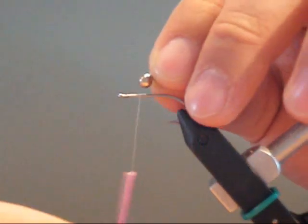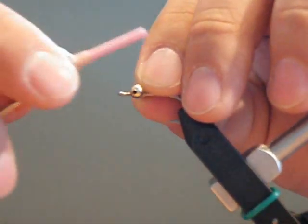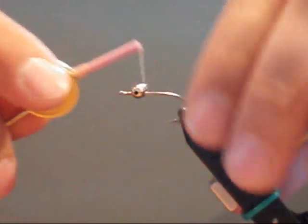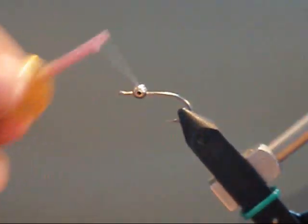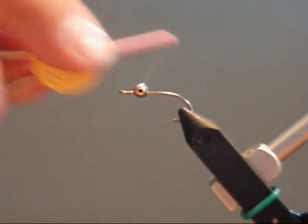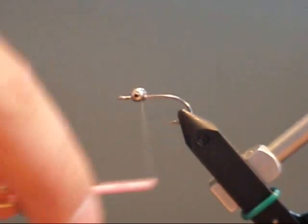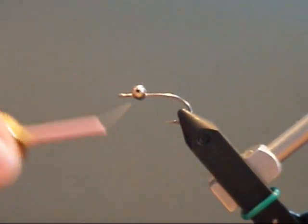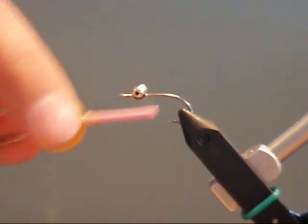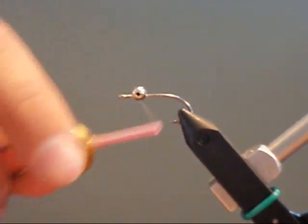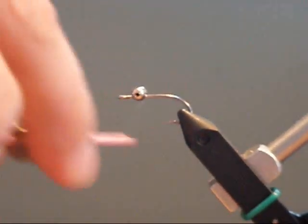At about an eye and a half length back from the eye, tie on some stainless steel chain eyes on top of the hook. Use figure eight wraps to tie in your bead chain eyes. Multiple wraps in one direction can work, and then you can use a helicopter technique to tie them in as well.